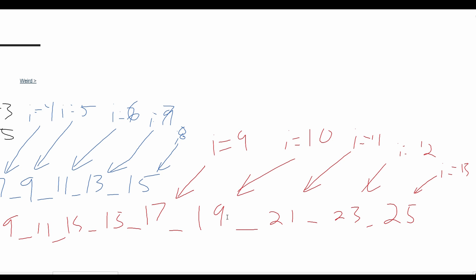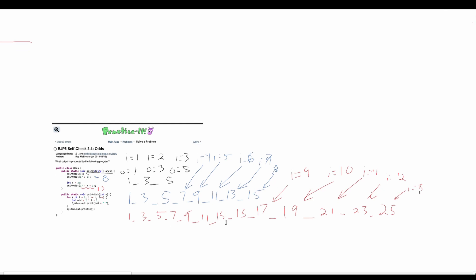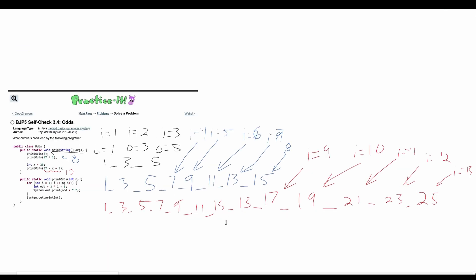So those are going to be your lines of output. Each different color represents a different line, and that is how we are going to print out all of these numbers in the output.